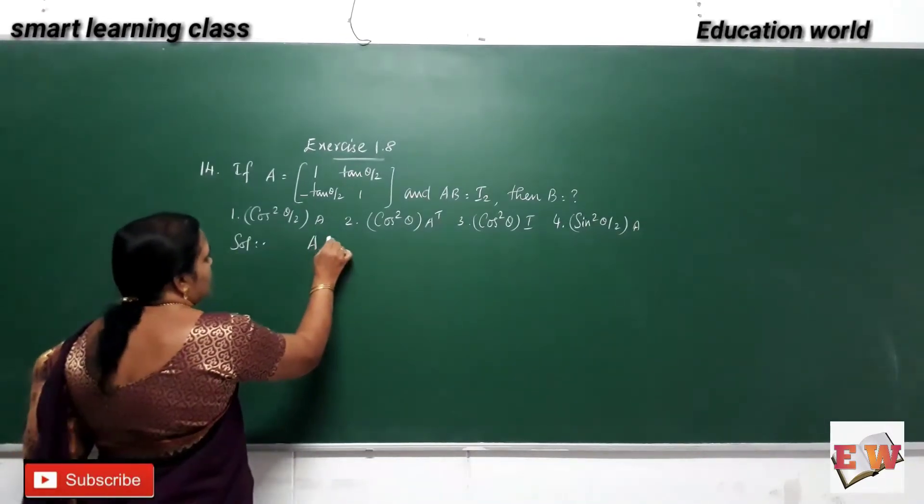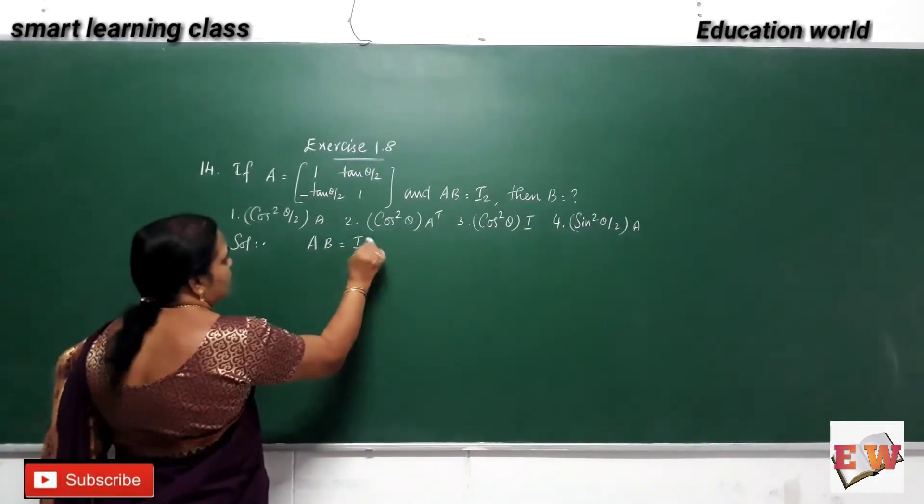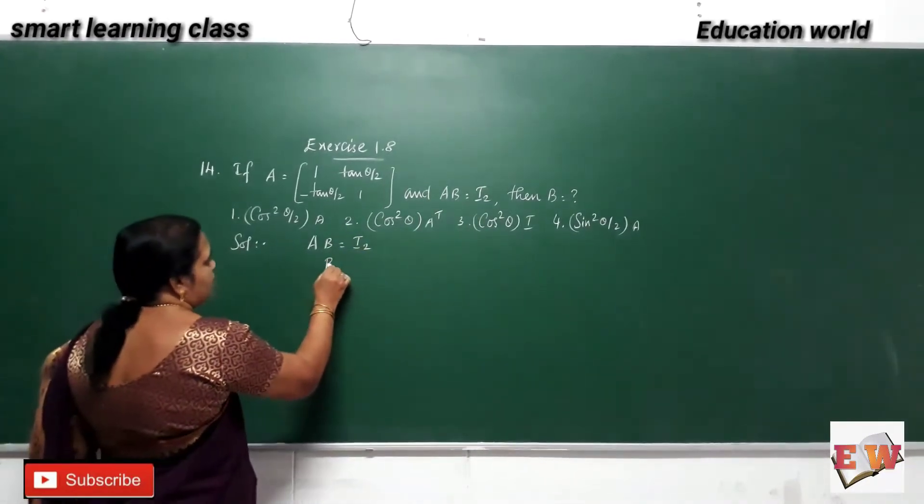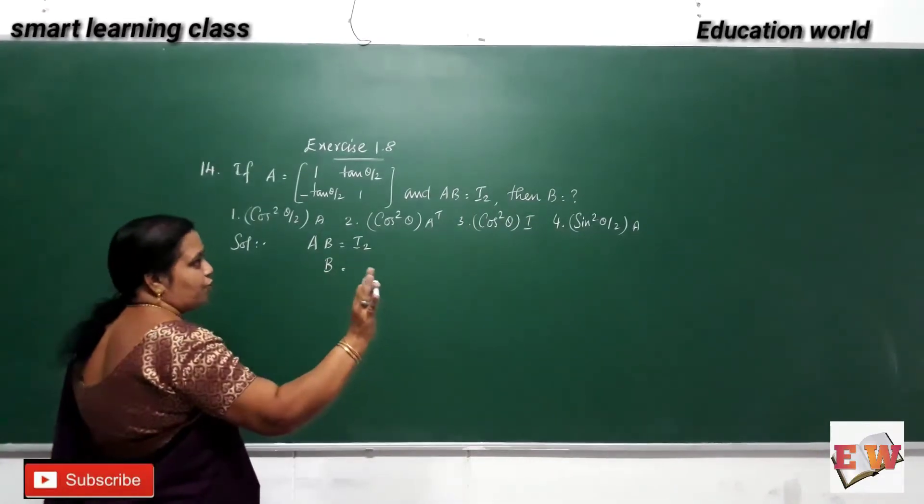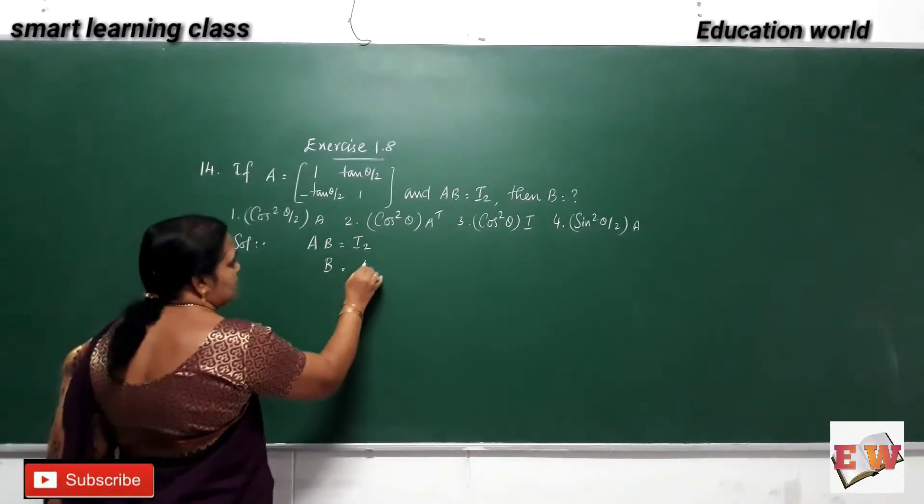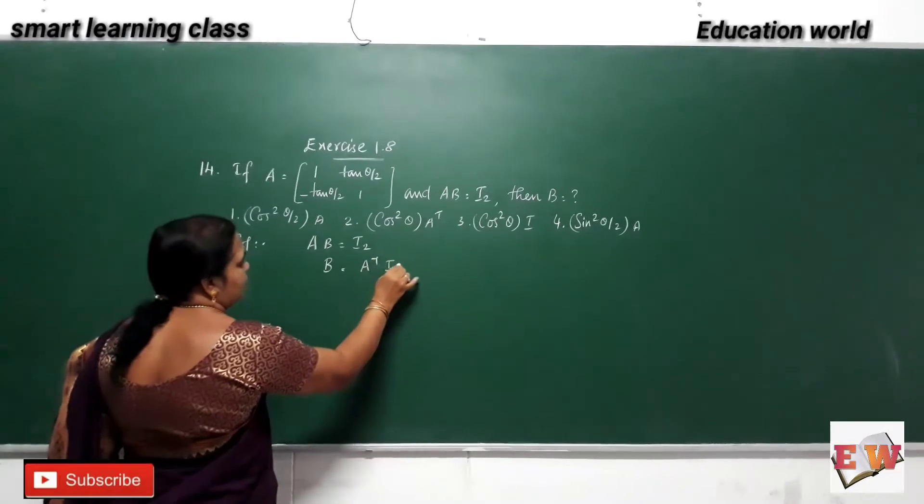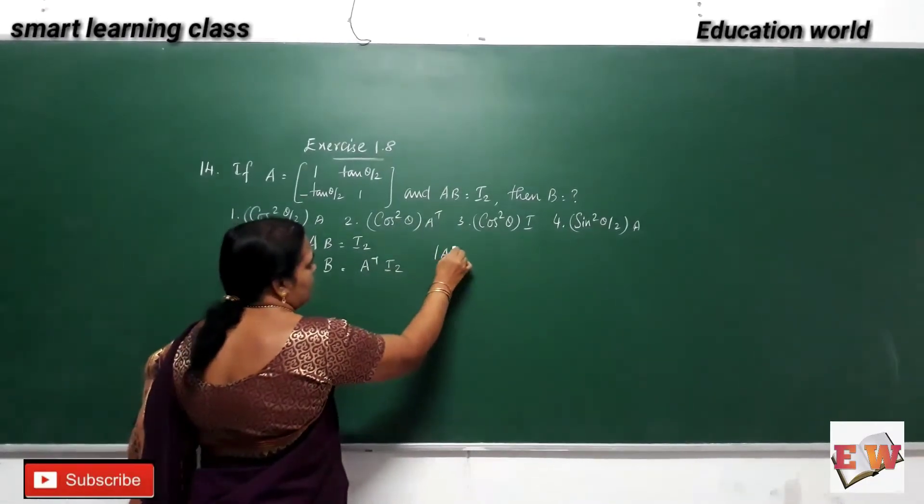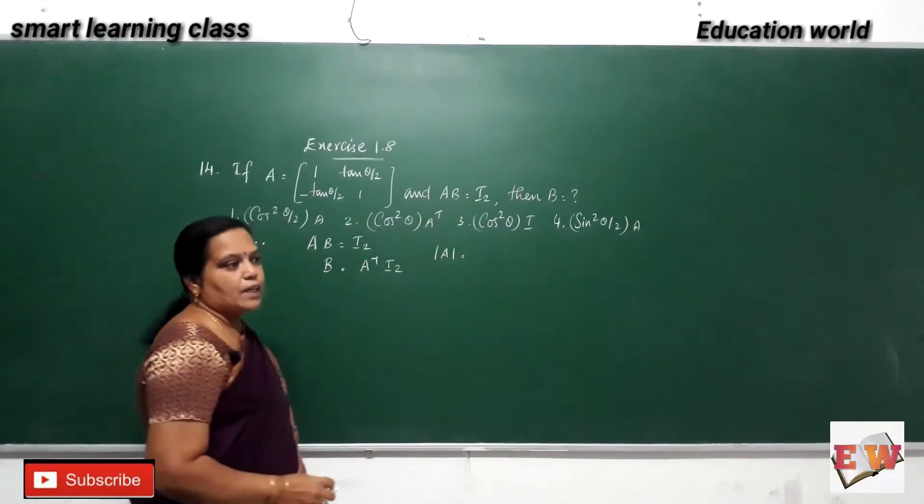They have given AB is equal to identity matrix as the data. We have to find the value of B. If it is coming this way, means A inverse into I. We have to find the A inverse, for that we have to find the determinant value.